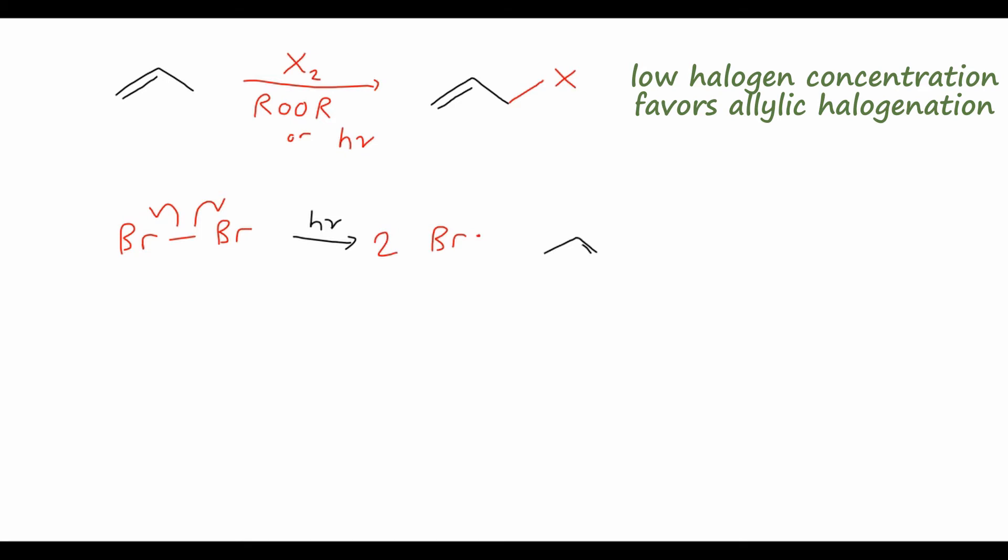Then, if I have my propene here, and I can explicitly draw in the allylic hydrogen, we know that this carbon-hydrogen bond is weaker than it would normally be for an alkane. So the bromine radical can attack that carbon-hydrogen bond, breaking the C-H bond homolytically, so we have one electron forming a bond with the bromine, and the other going onto the carbon to form a radical.